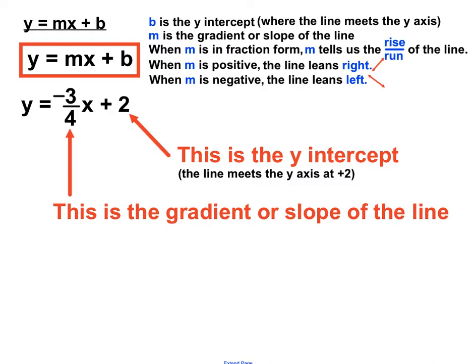And the gradient is minus 3 quarters. Well, let's worry about the minus later. But let's have a look at the gradient. The top number is the rise and the bottom number is the run. So we'll know that this line rises 3 for every 4 that it runs.